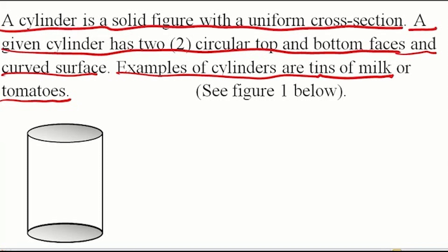Considering figure 1, this is a cylinder. We have two circular faces — one is at the top and one is at the bottom. Then we have the curved surface area. So a cylinder is made up of two circular shapes, one at the top and one at the bottom, and the curved surface area.